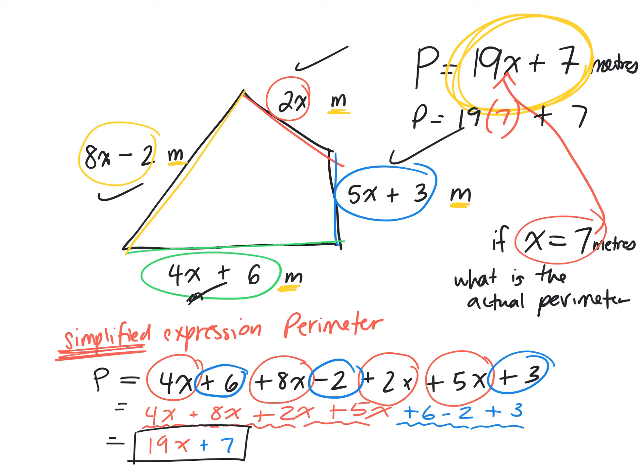19 times 7 plus that 7. What is the actual perimeter? What's 19 times 7? So we would do 19 times 7 is 133 plus the 7 equals 140 meters. So, the actual perimeter equals 140 meters.